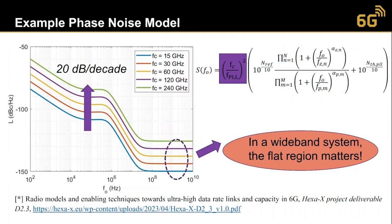Phase noise is often illustrated using a phase noise spectrum. Here you see one example: the x-axis shows offset frequencies, which describes the speed of phase variation, and the y-axis shows the strength of variations in dB at different offset frequencies, capturing the memory-dependent behavior. When you increase the center frequency, small things in the local oscillator — mechanical vibrations, noise — multiply in phase, causing more phase noise. Typically, increasing center frequency by a decade (factor of 10) gives 20 dB more phase noise, so this whole curve shifts up 20 dB per decade.